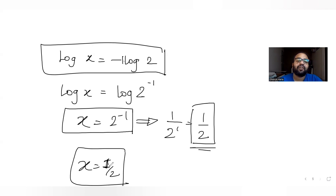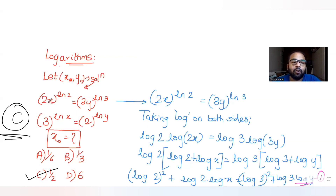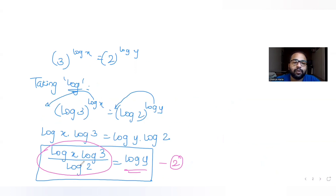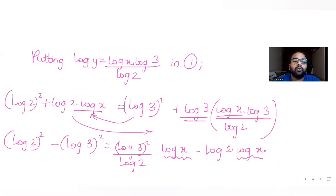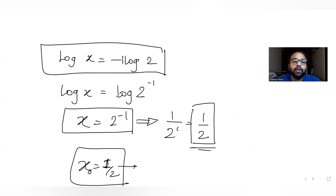We were asked to find x0 only, and the solution gives x0 = 1/2. The option that matches is (c), so (c) is the correct answer. In summary: we took log on both sides of both equations to get expressions in log x and log y; from equation 2 we found log y in terms of log x; substituting into equation 1 and solving gave log x = −log 2, hence x = 1/2.